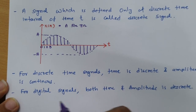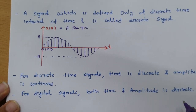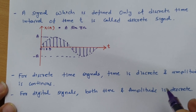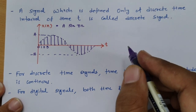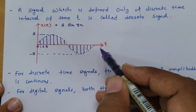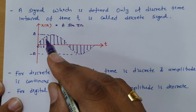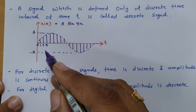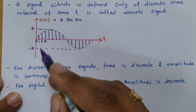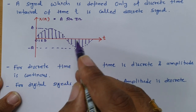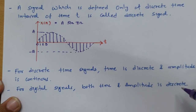When we talk about digital signals, both time and amplitude are discrete. In digital signals, first we do sampling to get a discrete signal, and then we do quantization. After quantization, we discretize the amplitude as well, so a digital signal has both time and amplitude which are discrete.